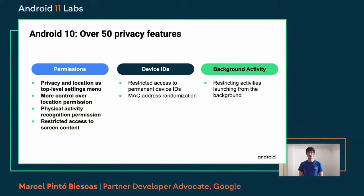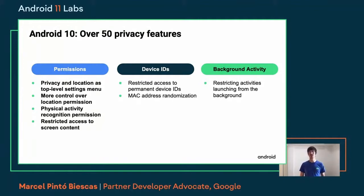We made changes in permissions. We added location as a top-level setting, making it easier for users to access the information. We made location permissions more granular, splitting between foreground cases and background access. We added background location reminders for users. We made activity recognition a runtime permission because of the sensitivity of this data. We also restricted a lot of the hardware identifiers that could allow developers to fingerprint users. We also restricted the launching of activities from the background, which was misused to pop up suddenly without the user expecting it.